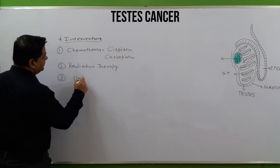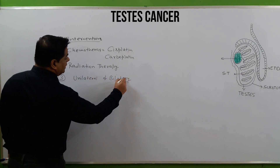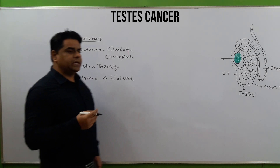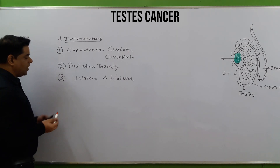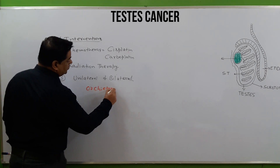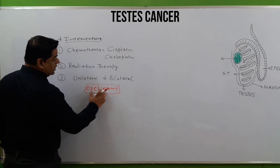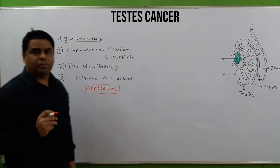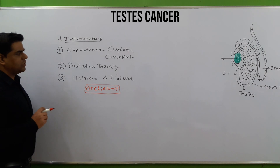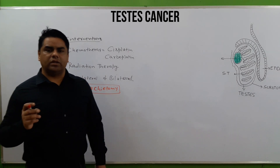Surgical intervention may involve unilateral or bilateral removal of the testes. The complete removal of a testis is known as orchidectomy (orchiotomy). The procedure is performed to remove the affected testis, and patients are educated about pre-operative, intra-operative, and post-operative care and complications.